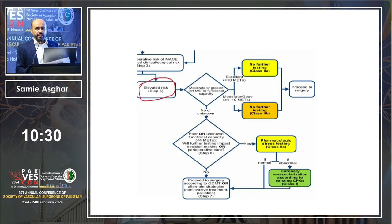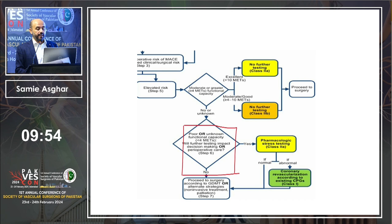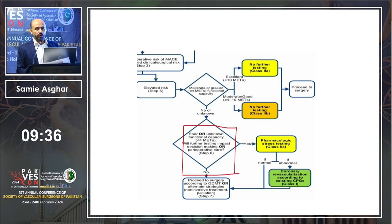If it is a case of elevated risk, you assess the functional class of the patient. If the functional class is very good — more than 10 METs — no further testing is required and you can proceed. If functional class is moderate, between 4 to 10 METs, the recommendation is still to proceed without further investigations, though the strength of recommendation decreases from 2a to 2b. The challenging part is when functional class is unknown or poor — then you assess whether further testing will impact decision making and whether there is an alternate to surgical treatment.